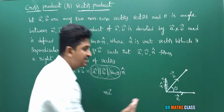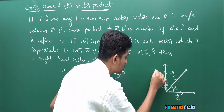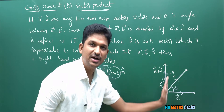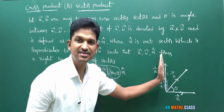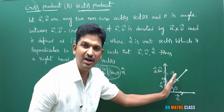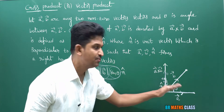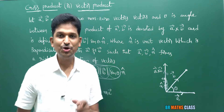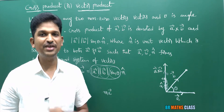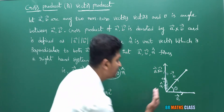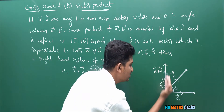So the direction of a̅ cross b̅ is along the direction of n̂. Since n̂ is perpendicular to both a̅ and b̅, a̅ cross b̅ is also a vector which is perpendicular to both a̅ as well as b̅. The direction of a̅ cross b̅ is along the direction of n̂, which is determined by the right-hand system.